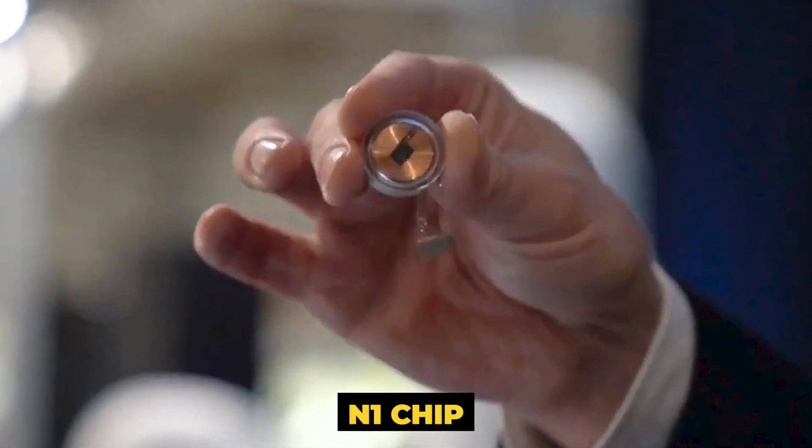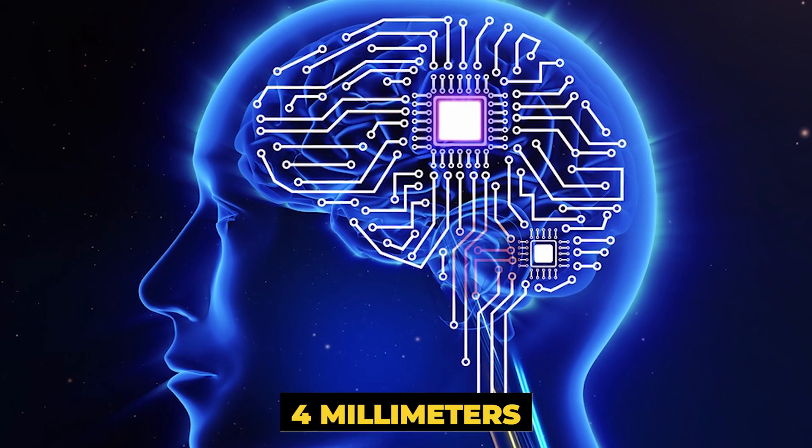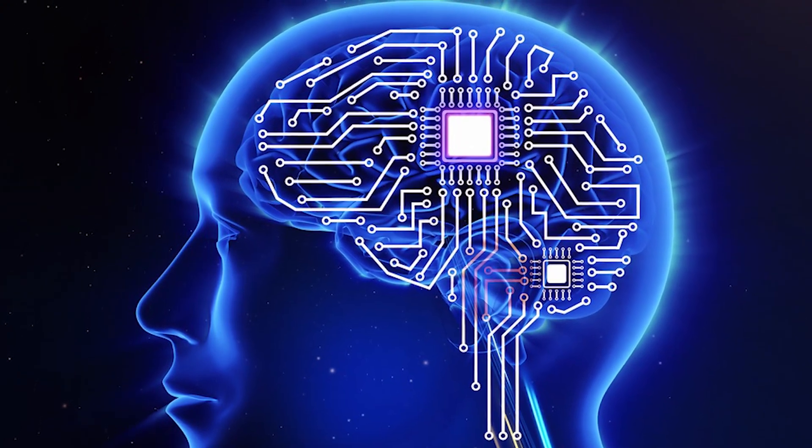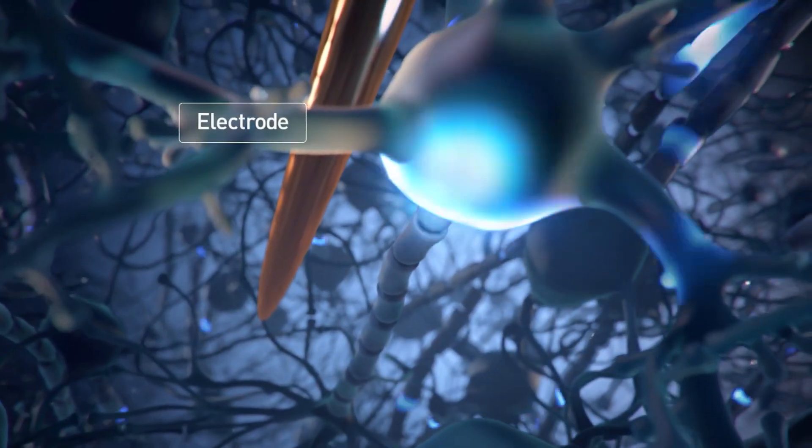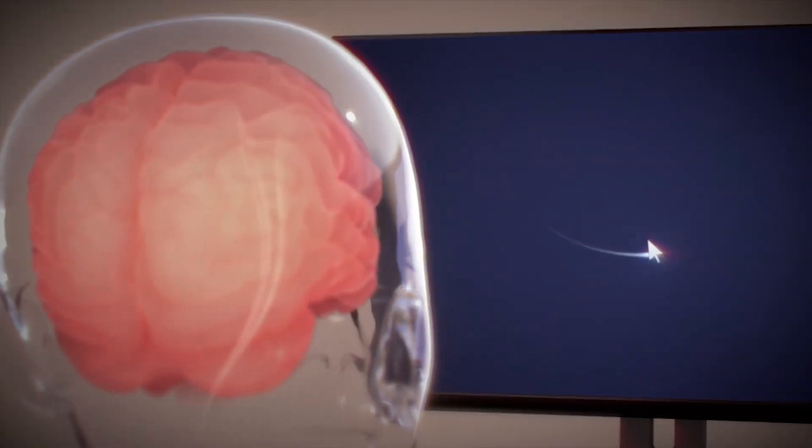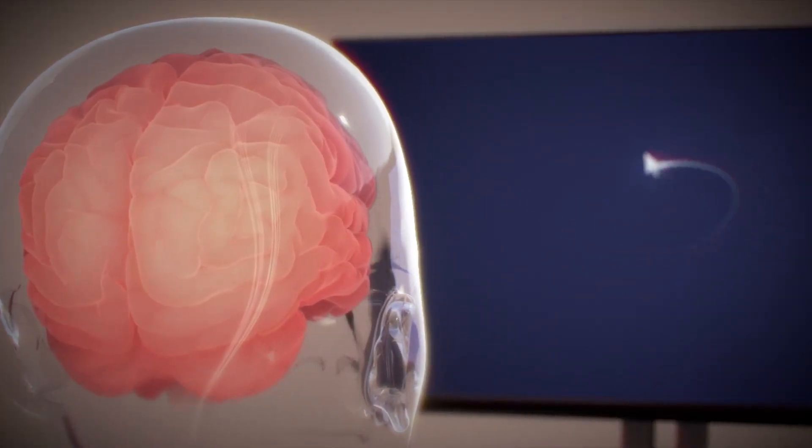Neuralink is basically a small N1 chip set which is 4 millimeters in diameter and it has various wires with electrodes and insulation for the wires. If you're wondering what the electrodes do, well, don't worry. You'll find out soon.